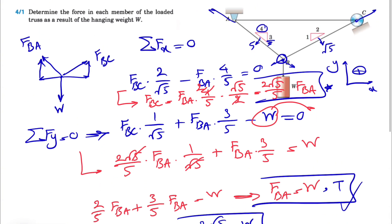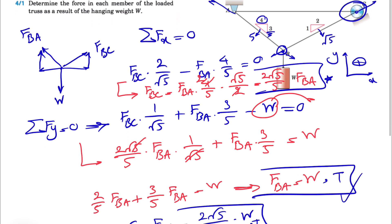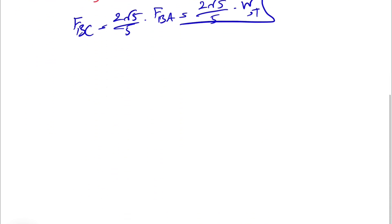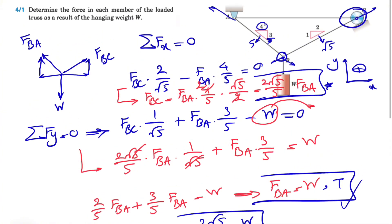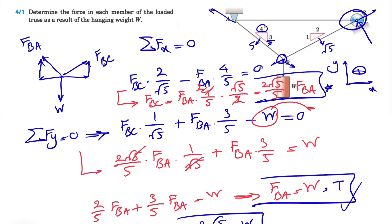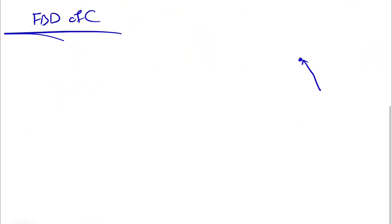There's one more member left, FAC. For that, we go to the free body diagram of joint C. At point C, we have a roller, meaning we only have a normal force NC since we don't consider friction unless given a friction coefficient. So the forces at C are the normal force NC and the force from member BC.